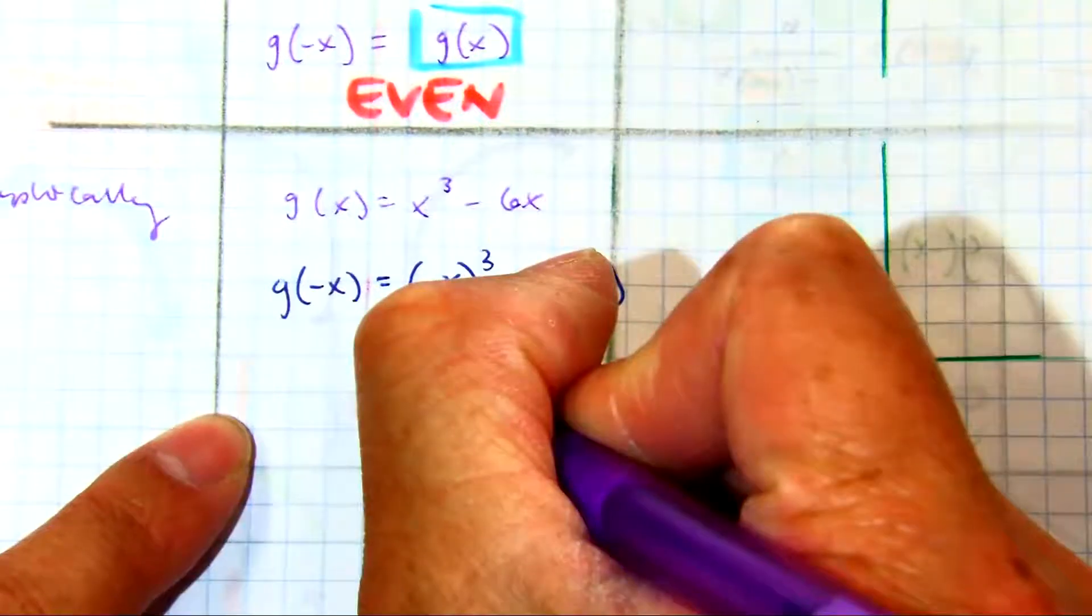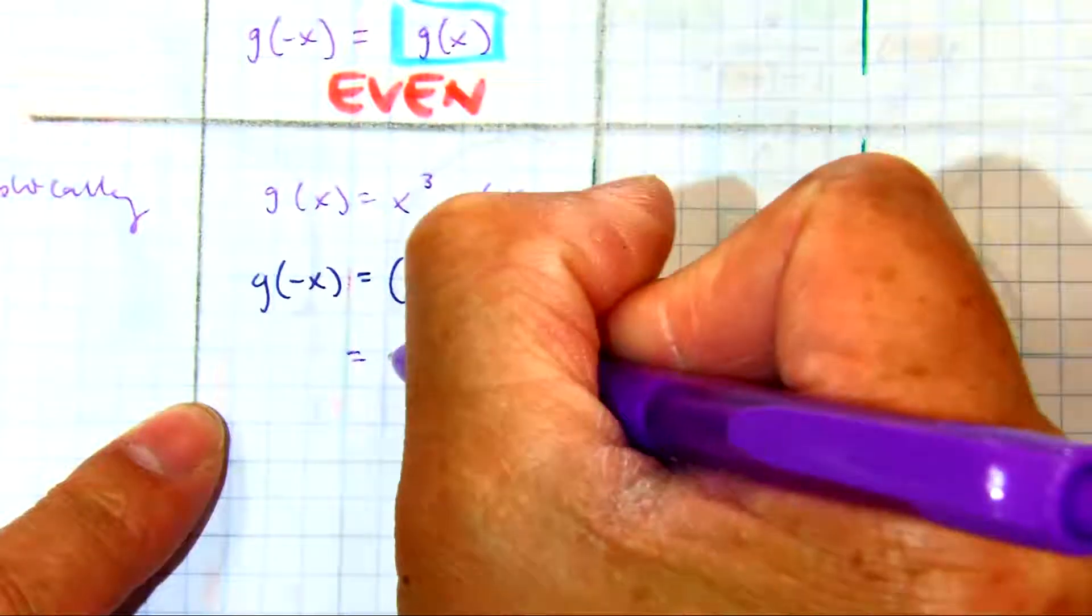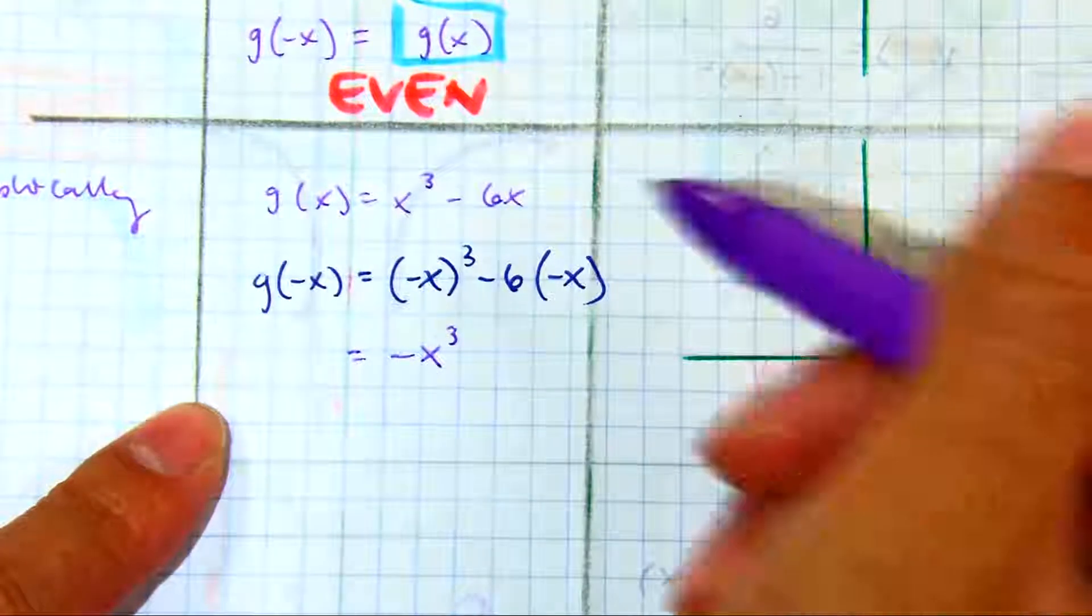Keep going. x times it's a negative x cubed. Correct. Minus, I mean plus 6x.